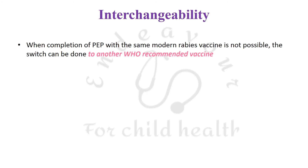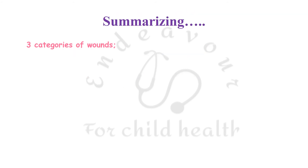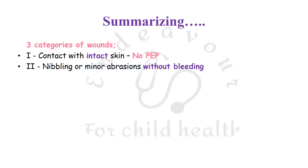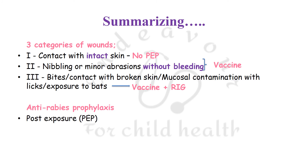Regarding interchangeability: when completion of post-exposure prophylaxis with the same modern rabies vaccine is not possible, switching to another WHO-recommended vaccine is permitted — but change of route of vaccination is not allowed at all. To summarize: category one is contact with intact skin — no post-exposure prophylaxis. Category two is nibbling or minor abrasions without bleeding — vaccine alone. Category three is bites with broken skin, mucosal contamination, or exposure to bats — vaccine with rabies immunoglobulin. Anti-rabies prophylaxis includes both post-exposure and pre-exposure types, both administered via intramuscular or intradermal routes.